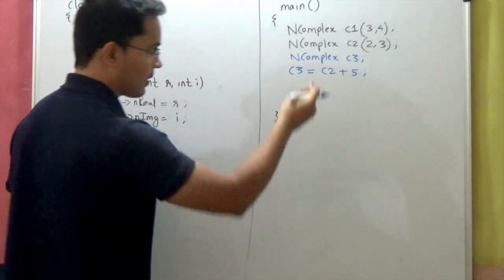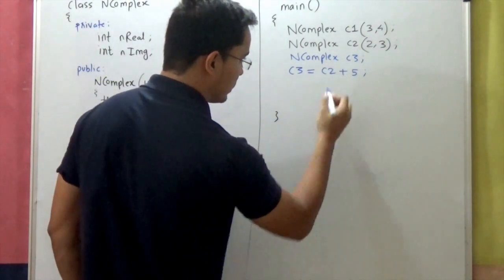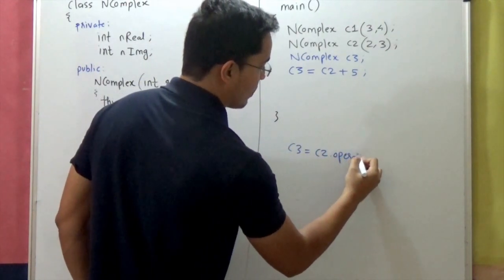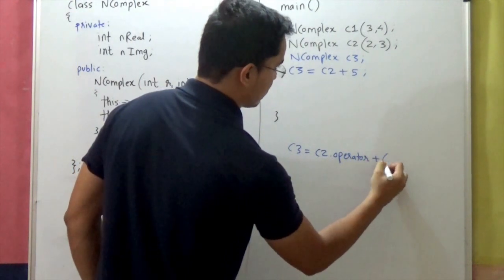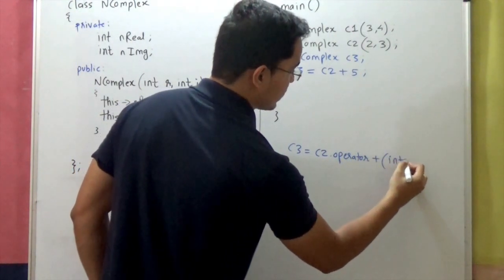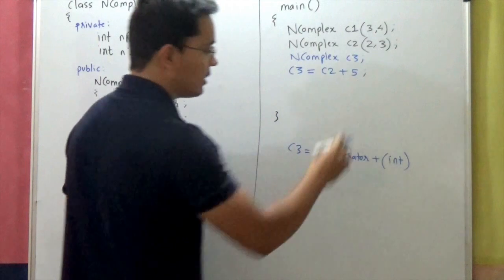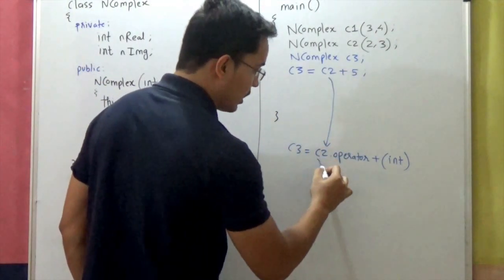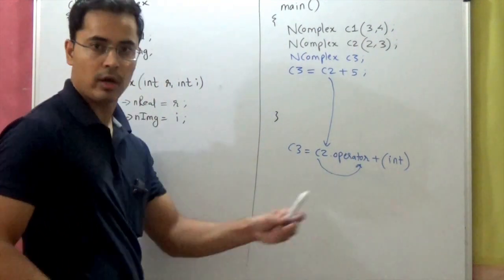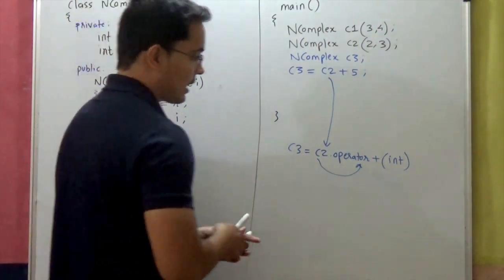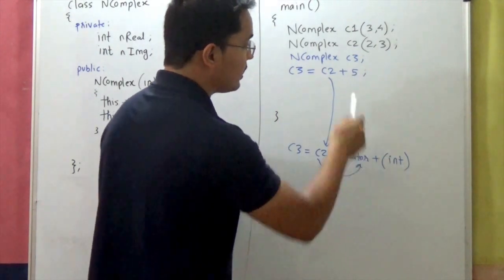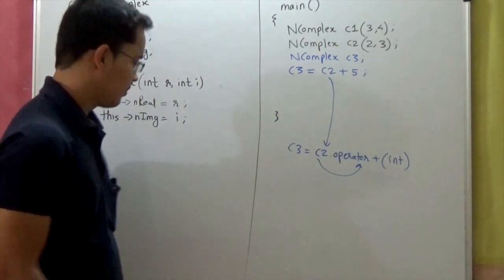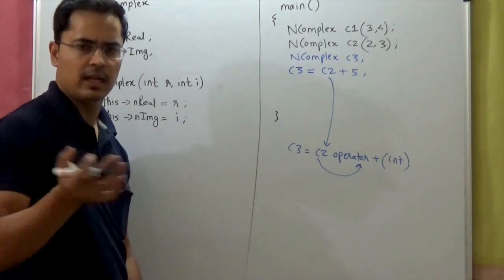For the call c3 = c2 + 5, this resolves as c3 = c2.operator+(integer), because the first operand invokes the function and the second operand is of type integer. We are adding an integer to a complex number, so we'll write that overloaded operator plus function, which we can easily do.